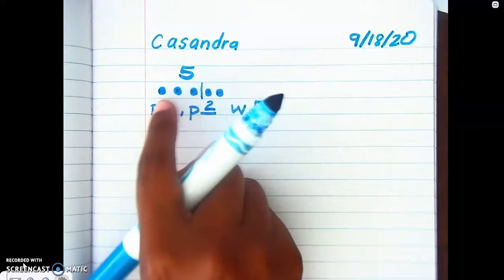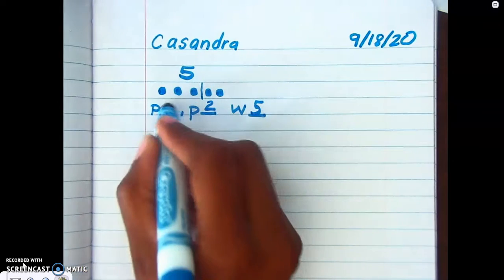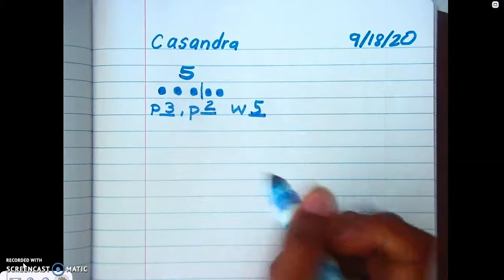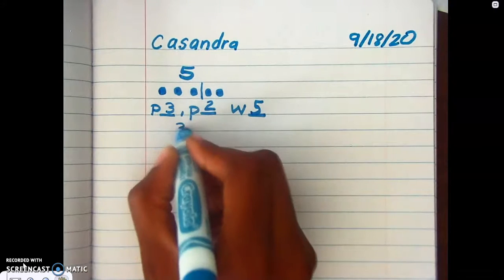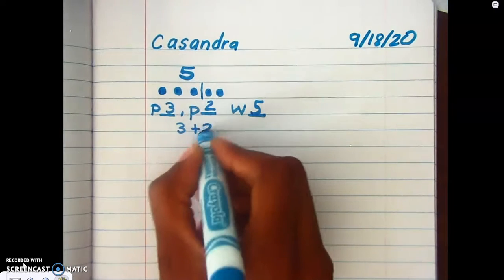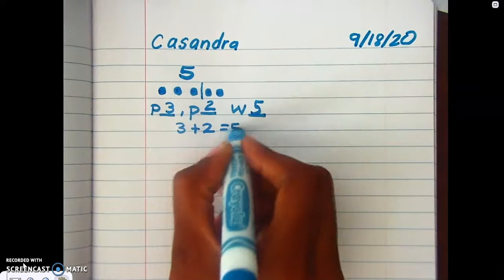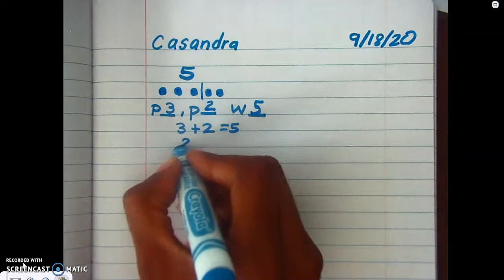Now I can use these numbers to write a fact family. I know if I put my two parts together, three plus two, it's gonna give me five. Even if I switch them around, like two plus three, I still get five.